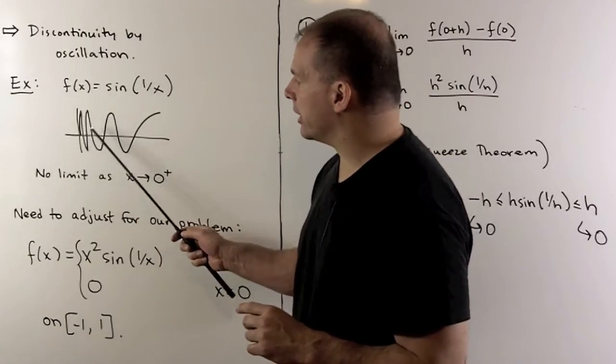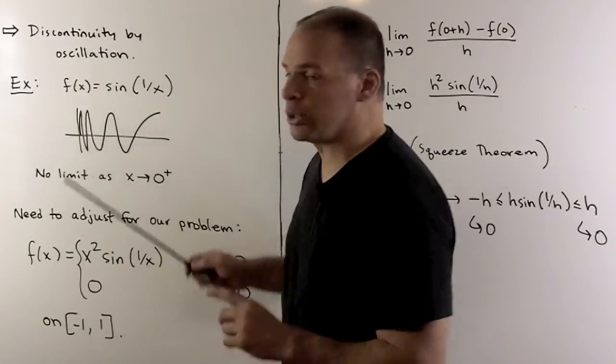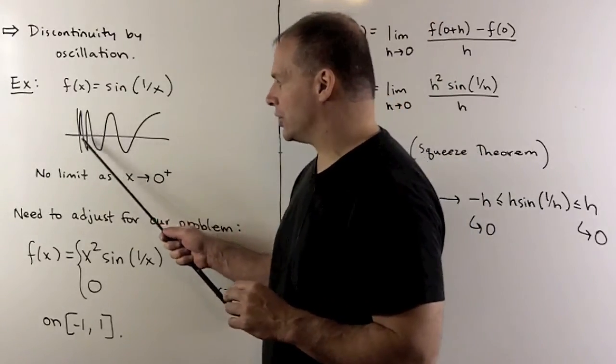what's happening here is, as we go into 0, this thing oscillates more and more wildly between -1 and 1, so we're never going to have a limit at 0 itself.